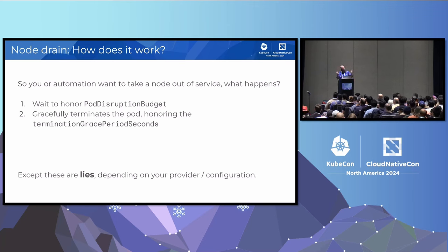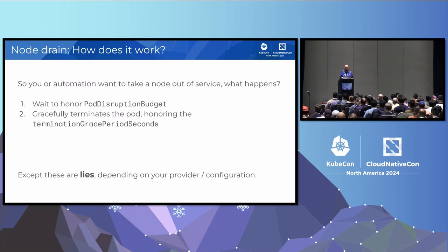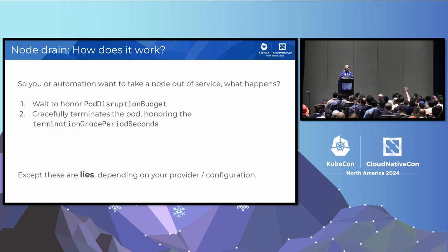So how does node drain work? When automation or you want to take a node out of service, Kubernetes first waits and tries to honor the pod disruption budget. If evicting a pod would violate the PDB, it waits for that period of time. Then it gracefully terminates the pod honoring the termination grace period seconds. These behaviors are both somewhat conditional, depending on your provider and your configuration.